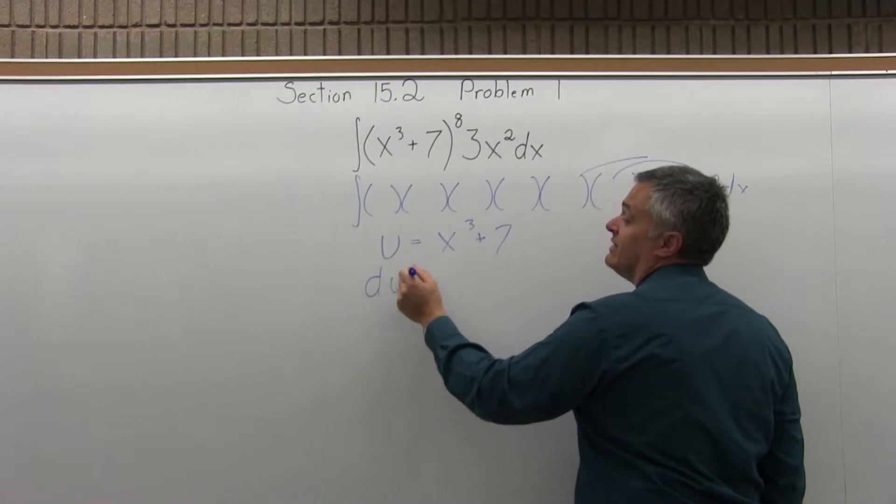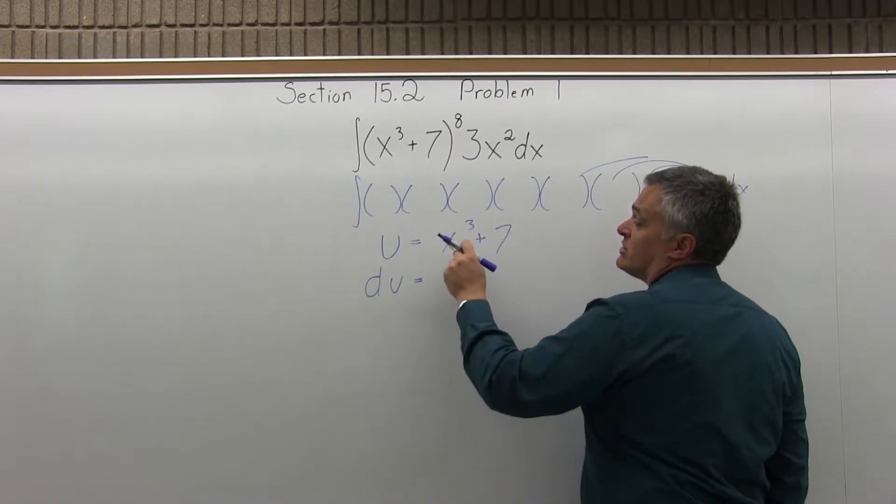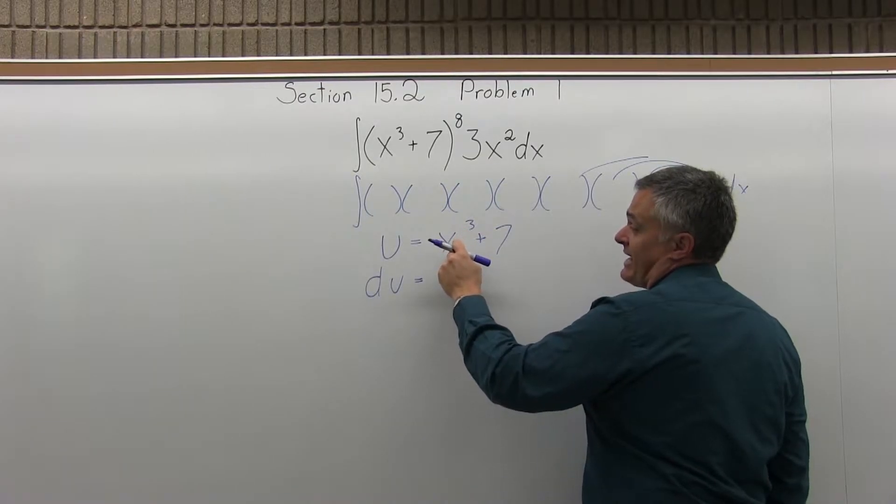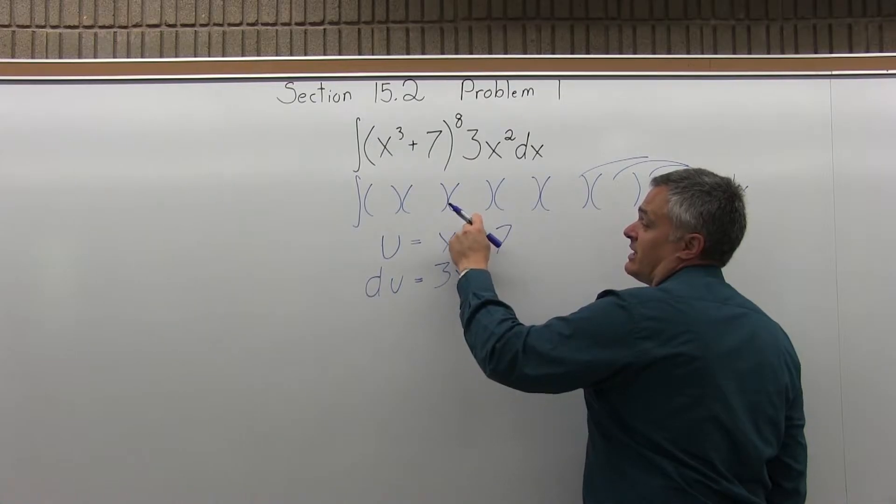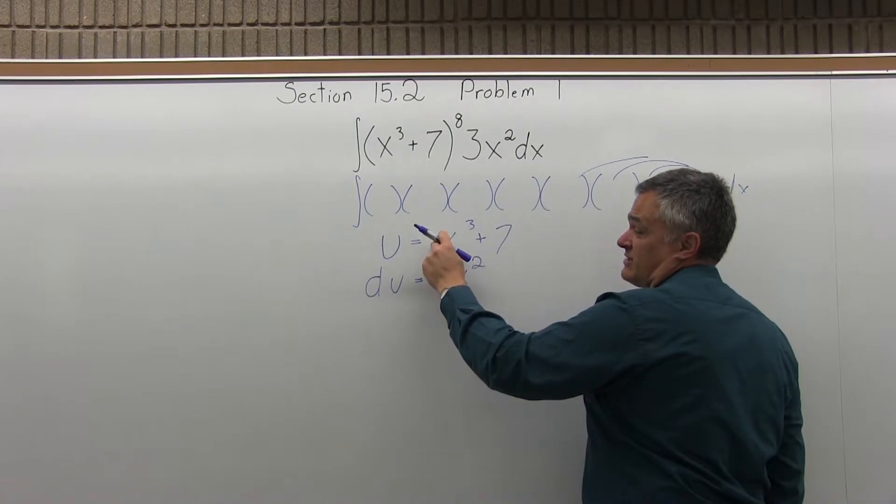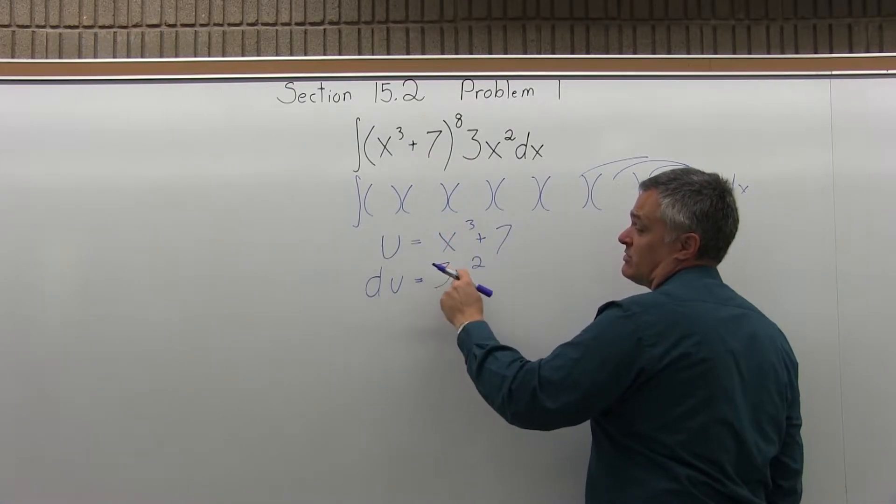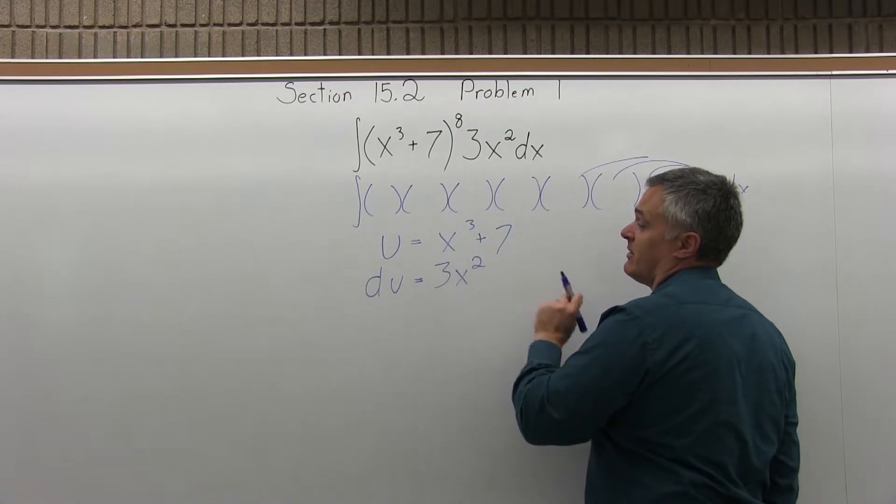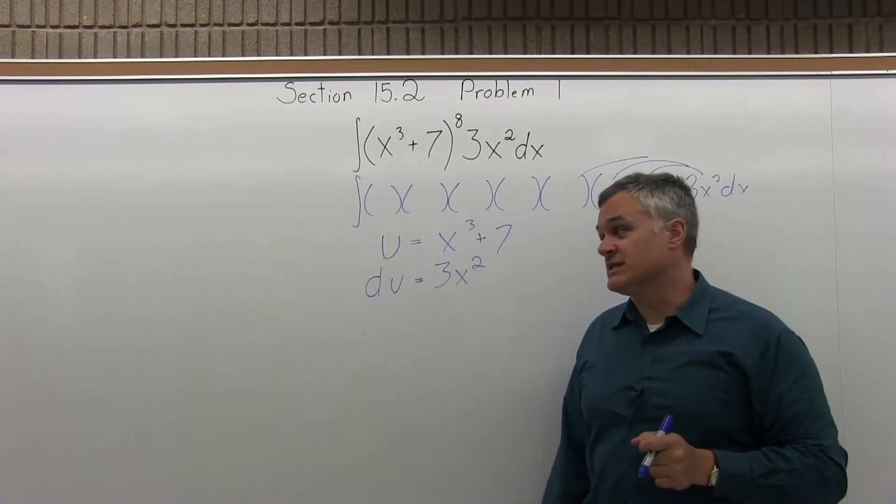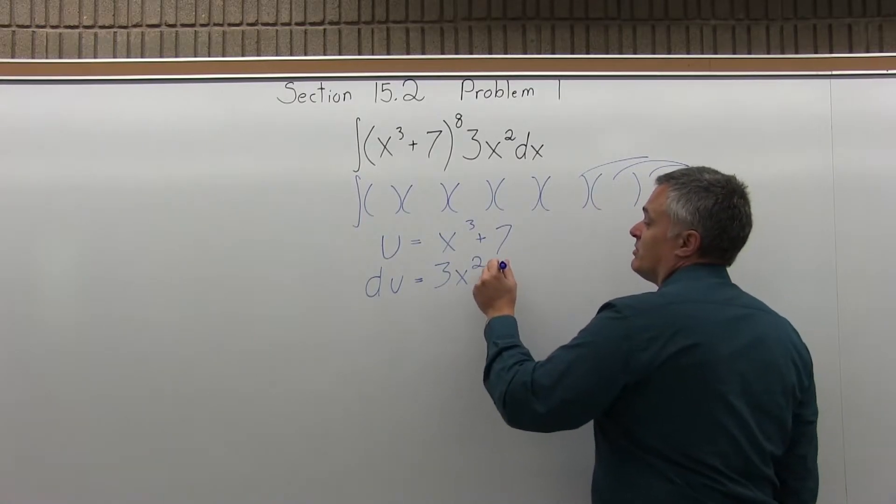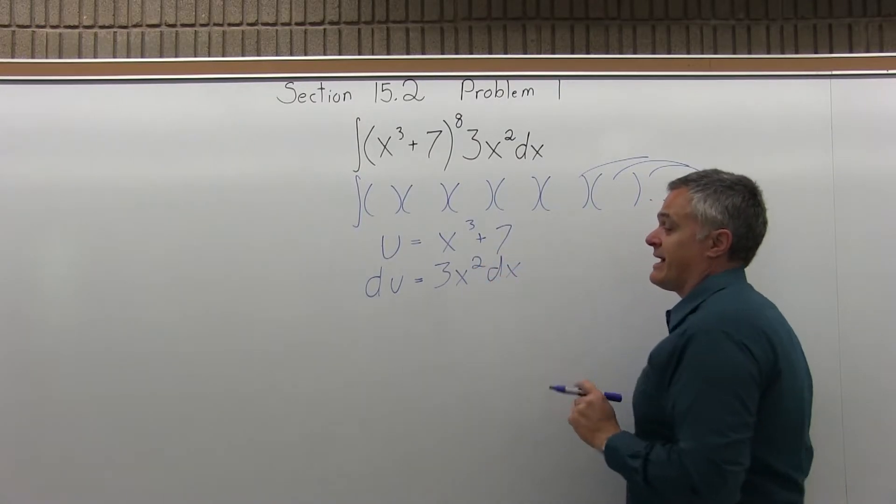Step two, find du, the derivative of u. So du will be, the x cubed will make a 3x squared. The 3 comes down times the number in front, which is understood to be 1. 3 times 1 is 3, x, 1 less power, second power. The 7, since it has no x with it, its derivative is 0. And then at the end you put dx for derivative with respect to x.